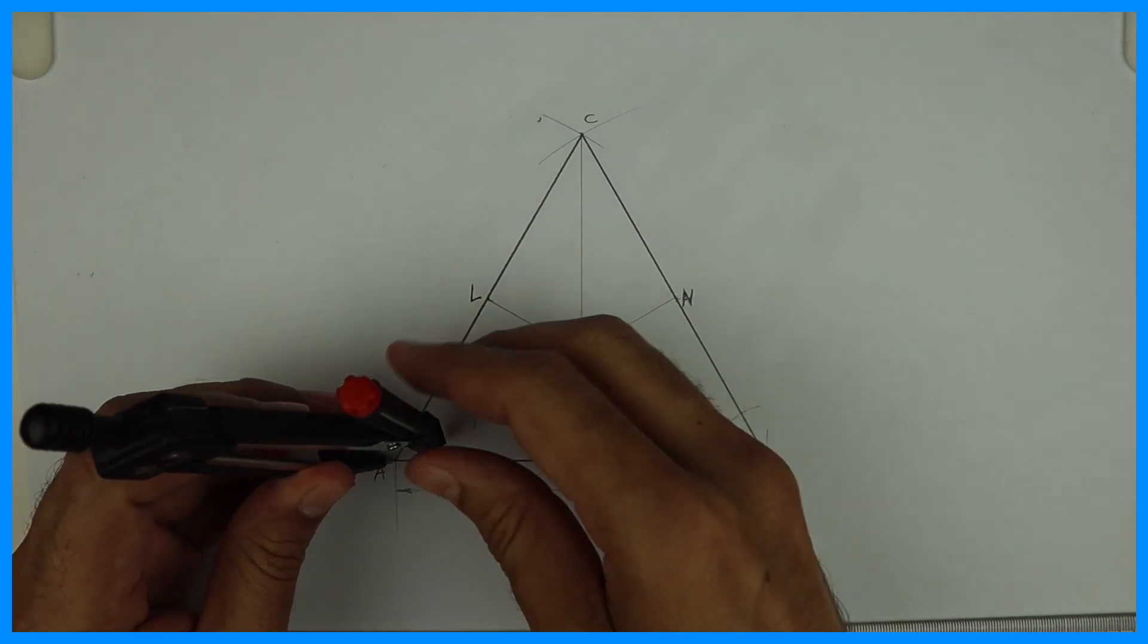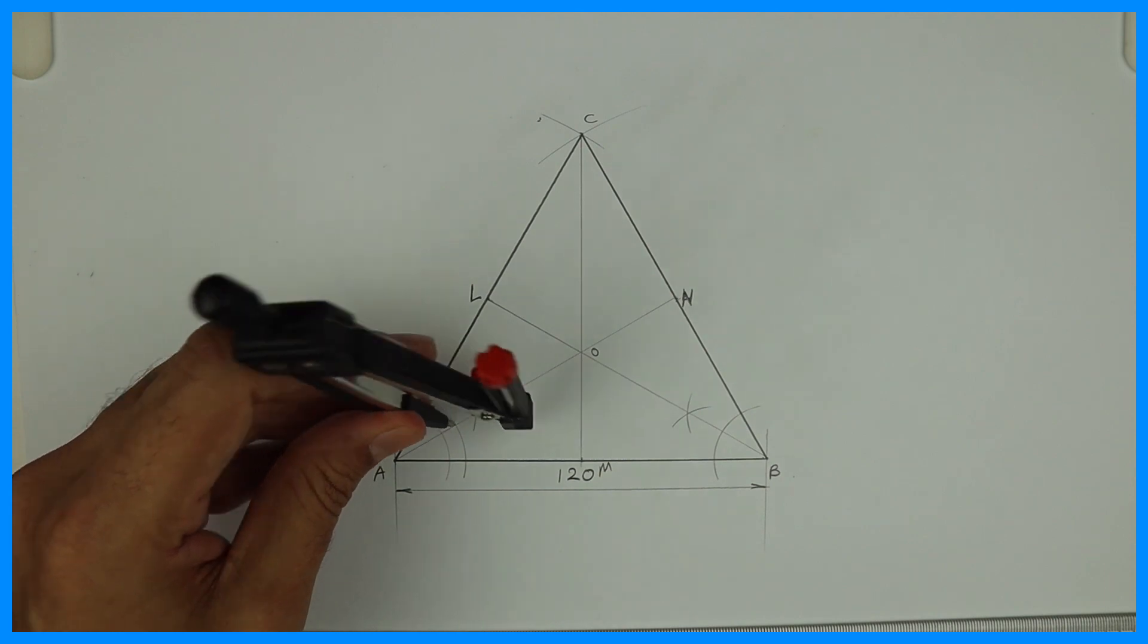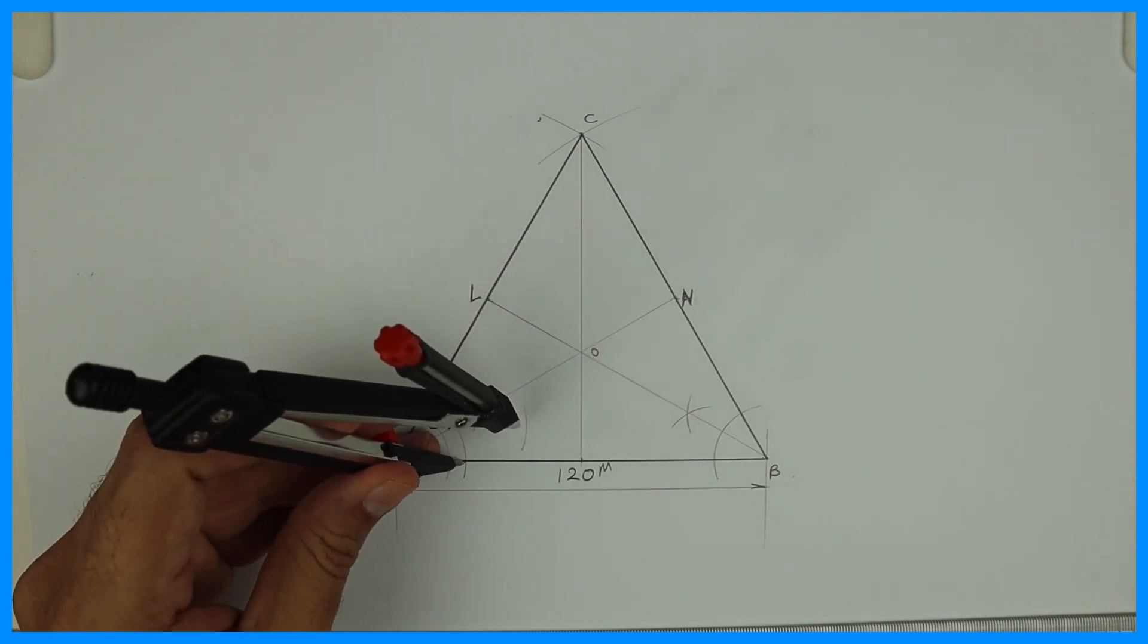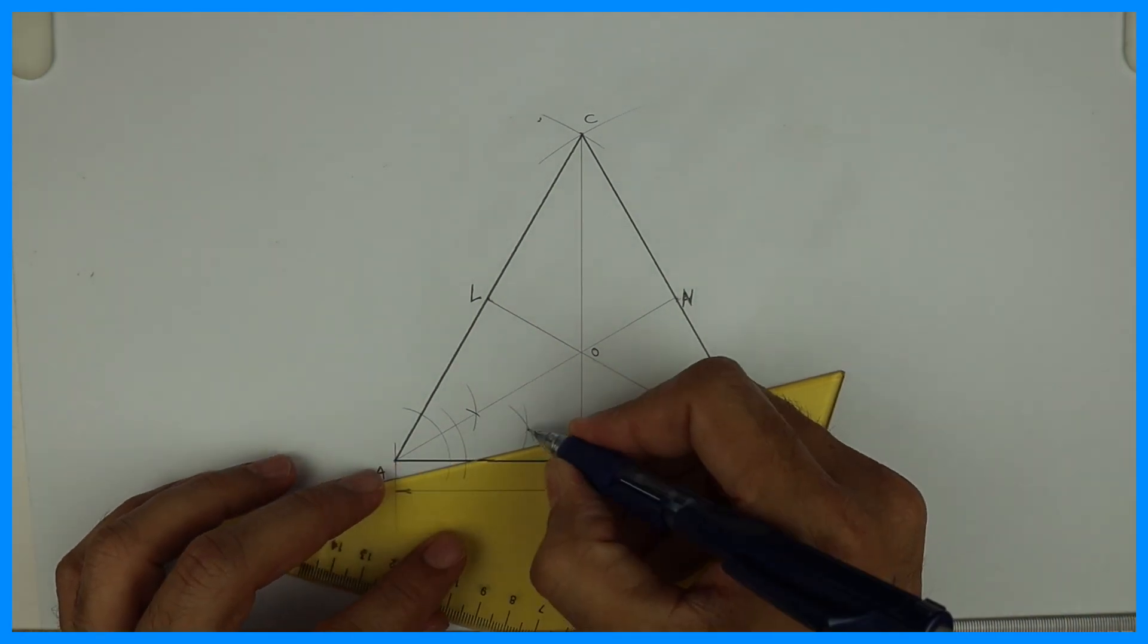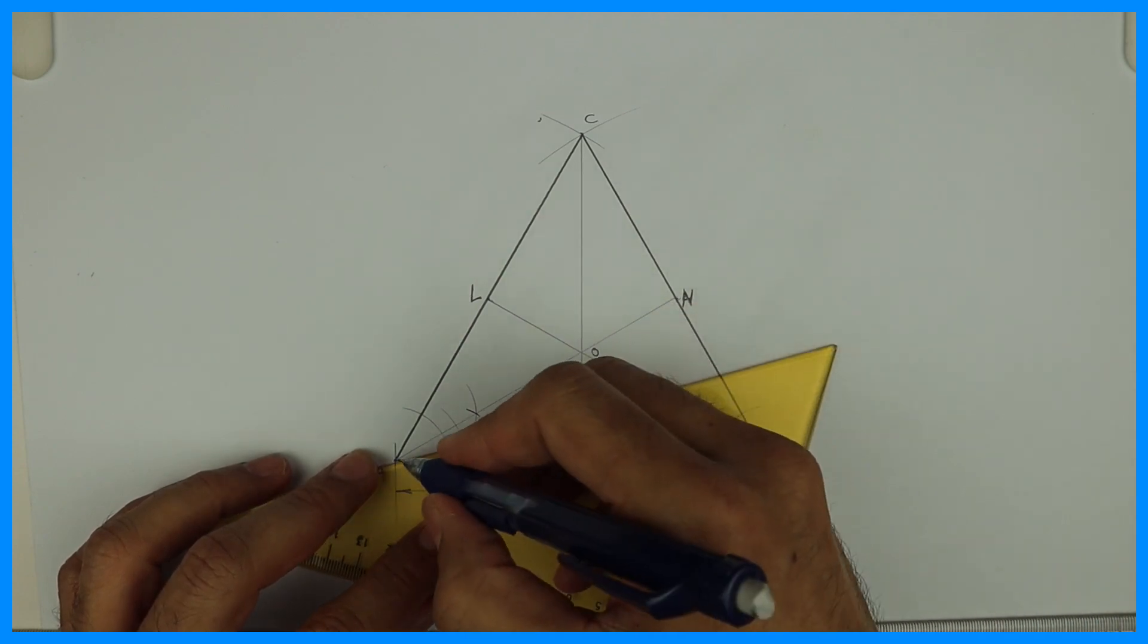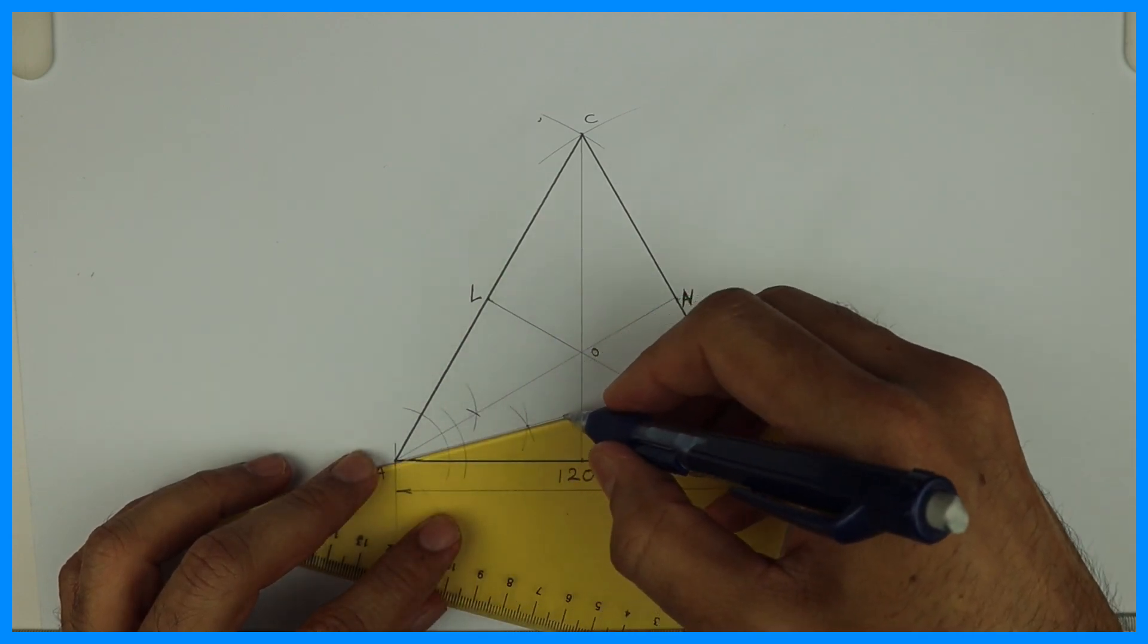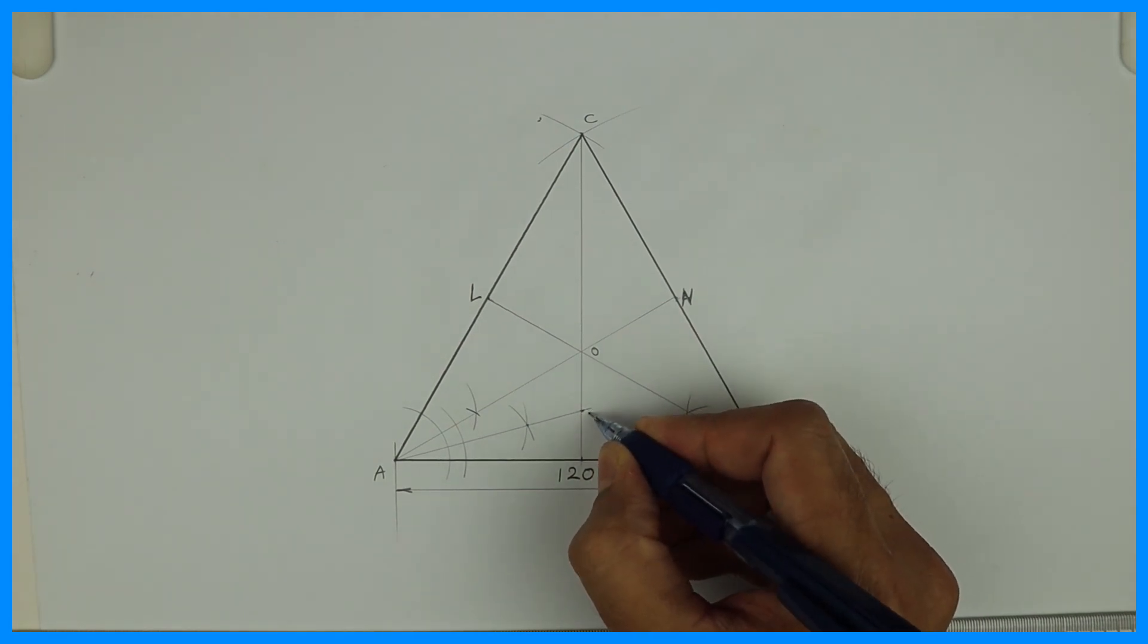Now we bisect angle OAB. Now you bisect the smaller angle. If you want to cross check this also you can take 15 degree. So you will get this point. Let's say that point is 1.